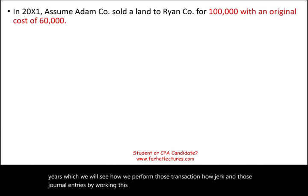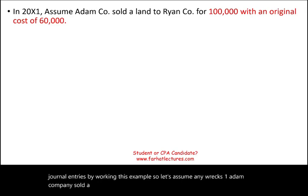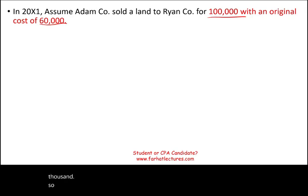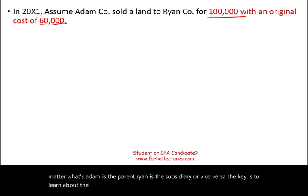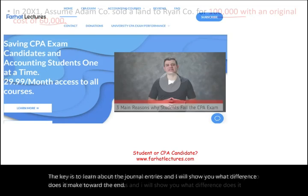Let's assume in year X1, Adam Company sold land to Ryan Company for $100,000, with an original cost of $60,000. Adam is the seller, Ryan is the buyer — the related party. It doesn't matter whether Adam is the parent and Ryan is the subsidiary, or vice versa. The key is to learn the journal entries, and I will show you what difference it makes toward the end.